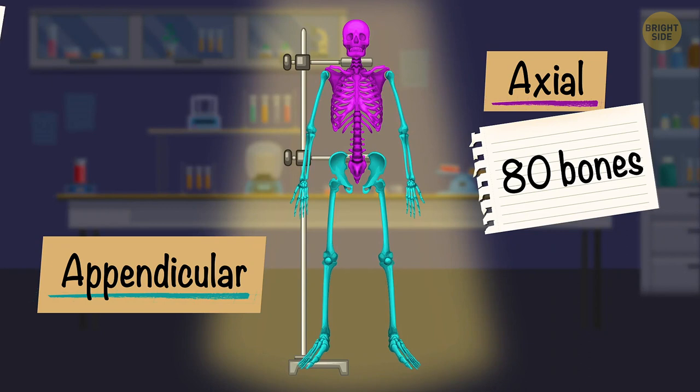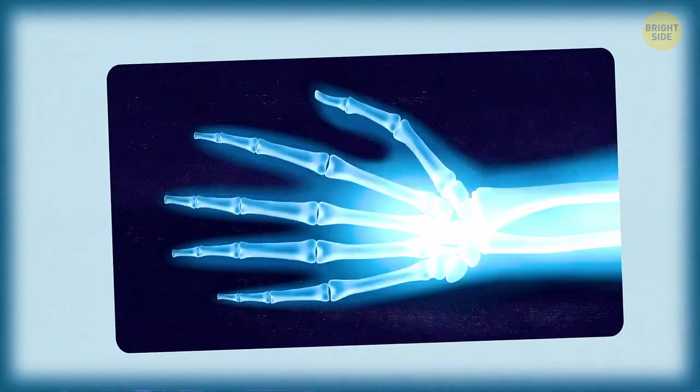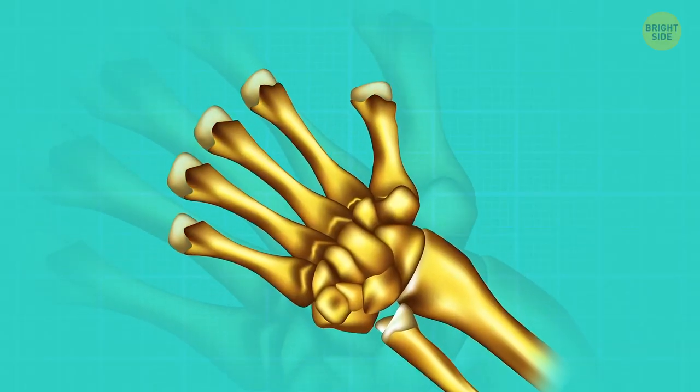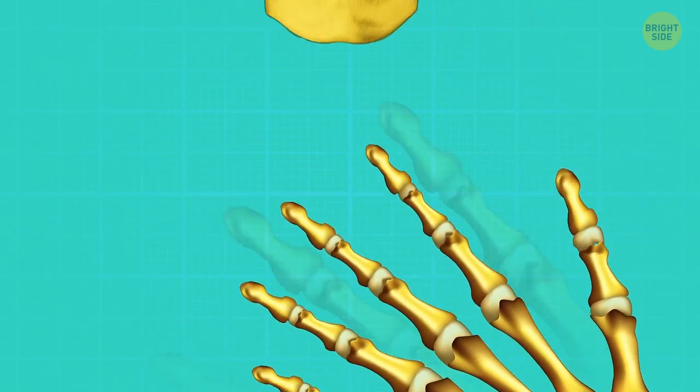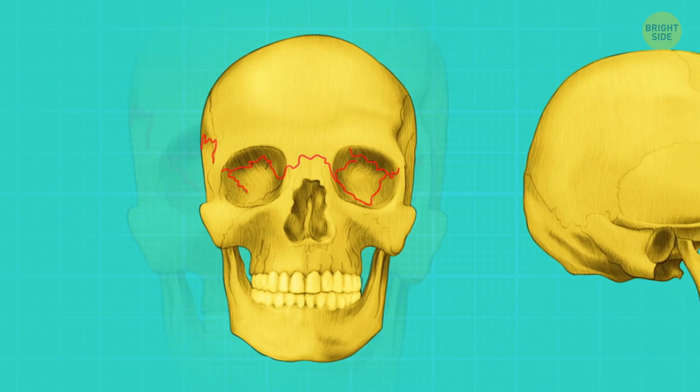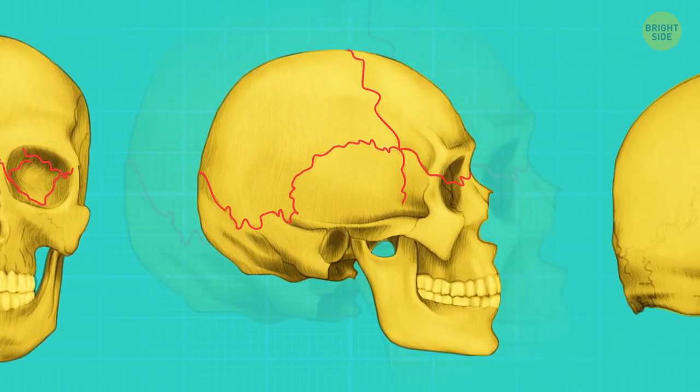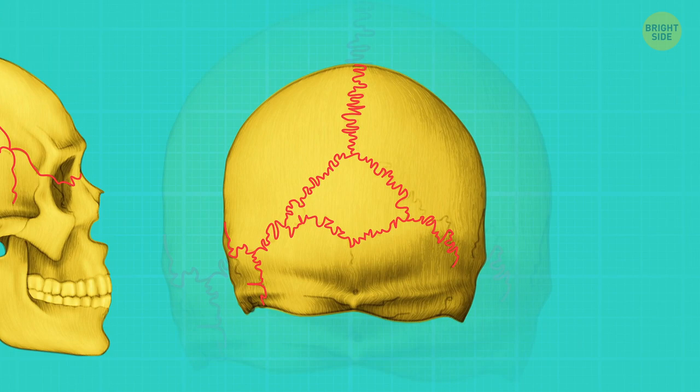The appendicular parts are all the rest, all the bones in your legs and arms. Every single bone is connected to one another through a joint, or a couple of them. You've even got them in your skull. It's not just one solid piece, it's made up of eight parts, with joints holding them together.